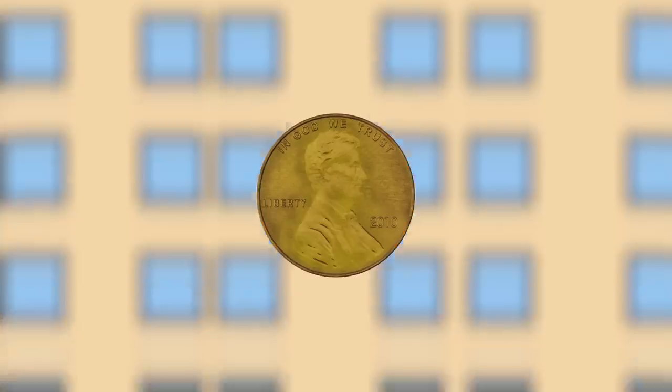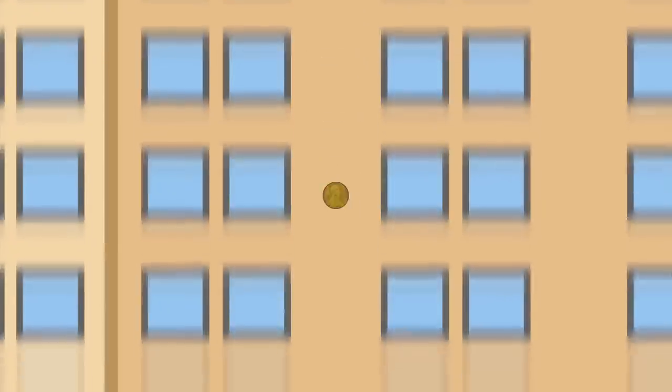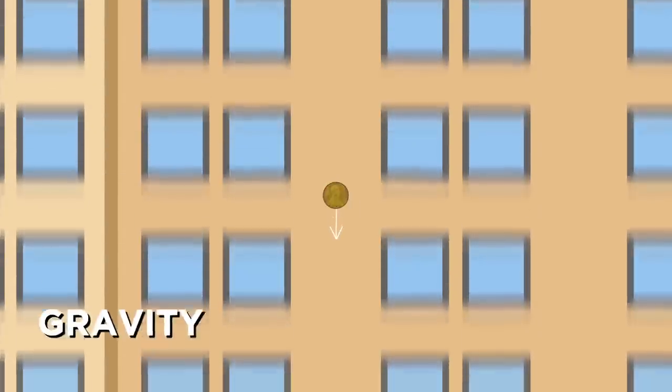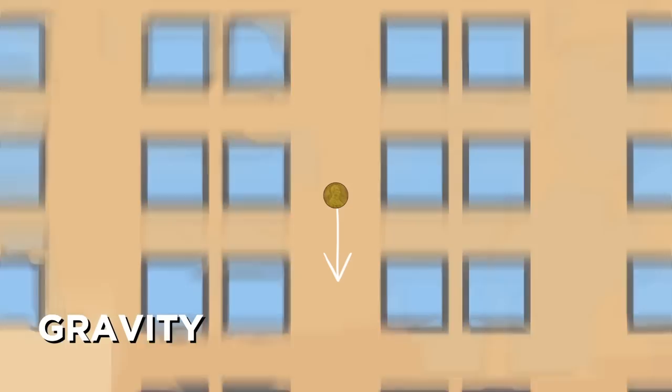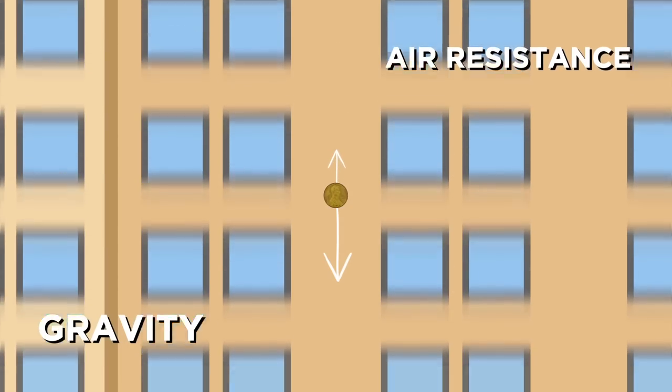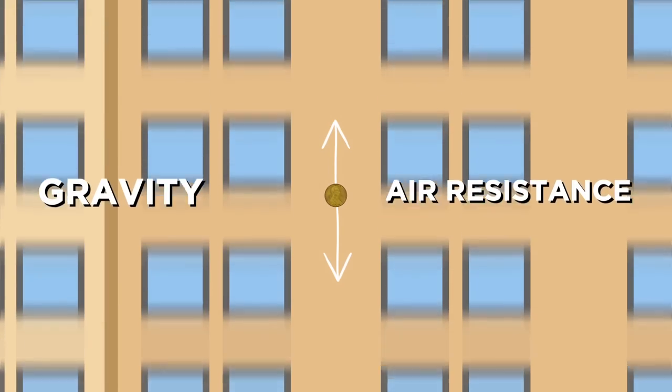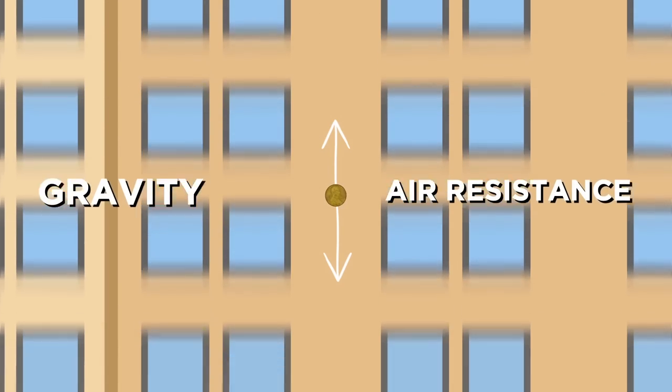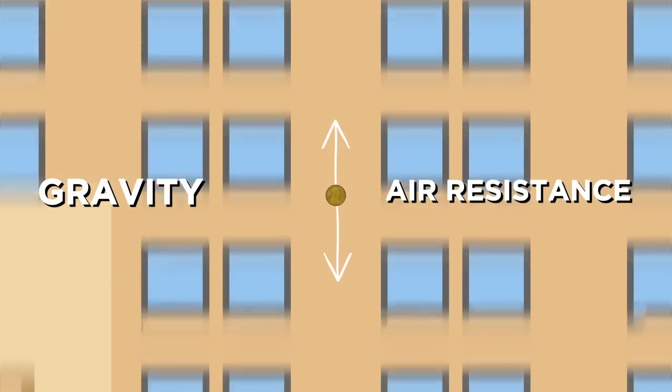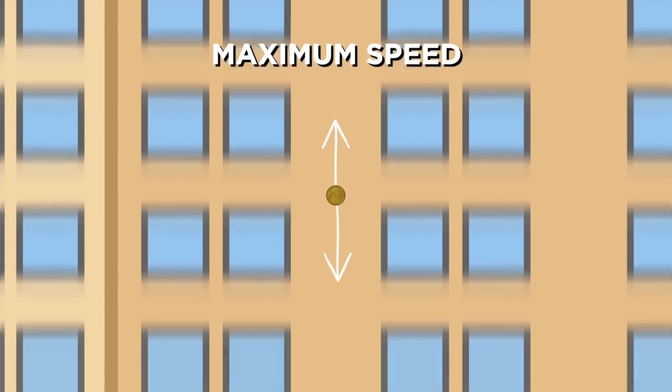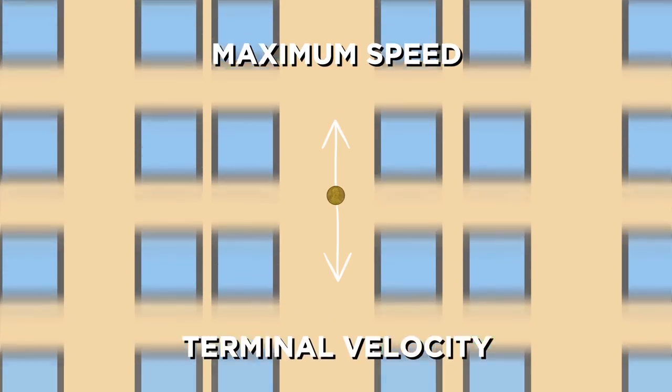Let's assume the penny used is a standard American one-cent coin. As the force of gravity pulls the penny faster and faster towards the ground, the amount of air resistance acting on it increases. Eventually, the accelerating forces will be balanced out by this drag, meaning the penny won't be able to go any faster because it would have reached its maximum speed, known as its terminal velocity.